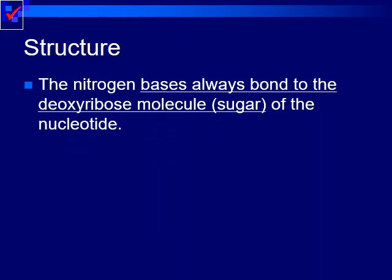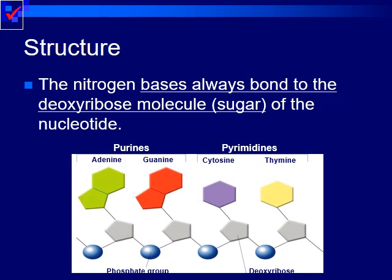The nitrogen bases always bond to the deoxyribose, or the sugar molecule, of the nucleotide. So we have our phosphate group, followed by our sugar, and then any one of the four nitrogen bases — either adenine, guanine, cytosine, or thymine.